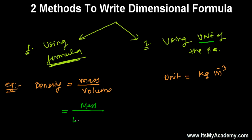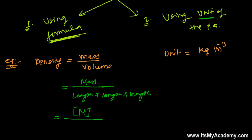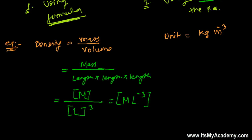And what is volume? Volume is length times breadth times height. Breadth is also length, and height is also length. So length appears three times — it's simply cubed. So it's going to be ML⁻³, and the dimensional formula of density is M with dimension 1, length with dimension minus 3, and time with dimension zero.